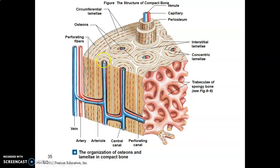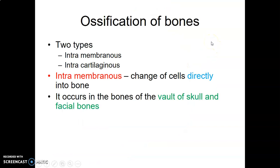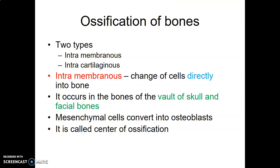The neurovascular structures in a Haversian canal communicate with each other at 90 degrees using a Volkmann's canal. Volkmann's canal connects one Haversian canal to another at 90 degrees. Bone is ossified through two mechanisms: intramembranous ossification and endochondral ossification.